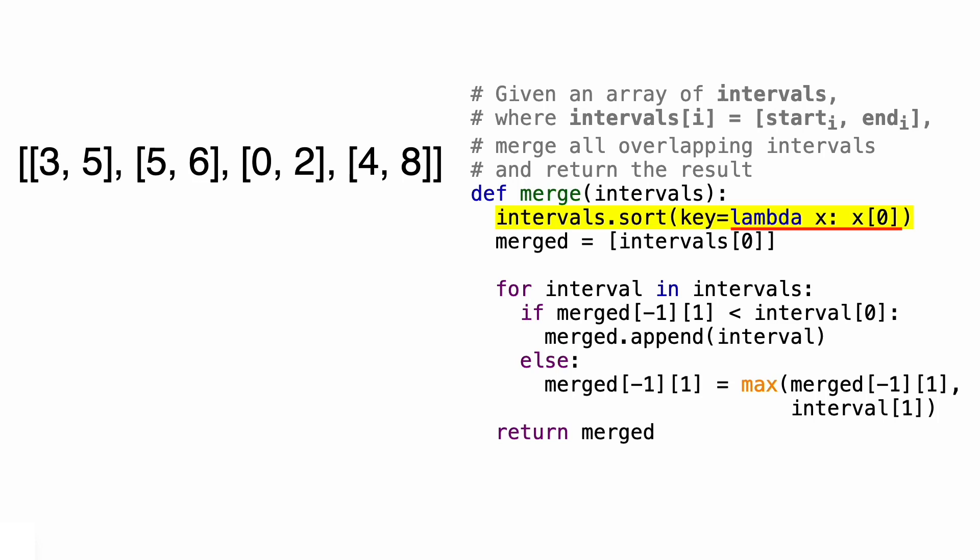If you're not familiar with lambda functions, I'd highly recommend you check out my video on Python lambda functions, and the link is in the description. But basically, this is a function that says, for each interval x, I want you to use the element at index 0, in other words, the starting value of that interval, to sort them. So using the starting values as the sorting key, we're going to sort the intervals in ascending order.